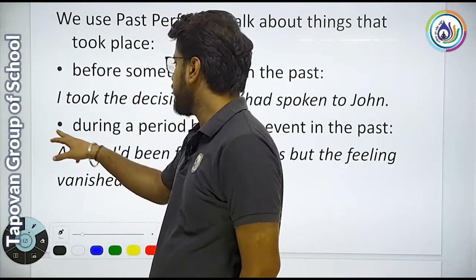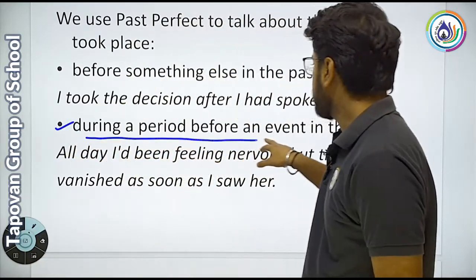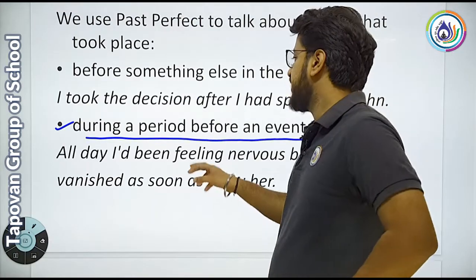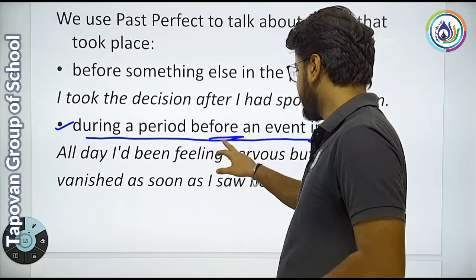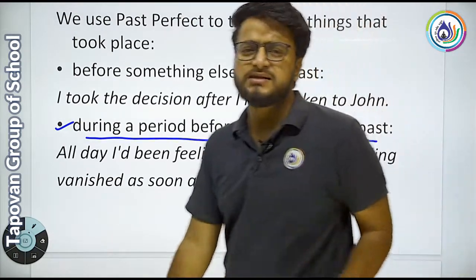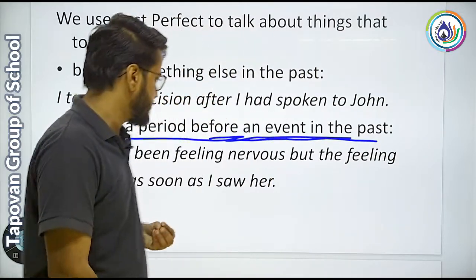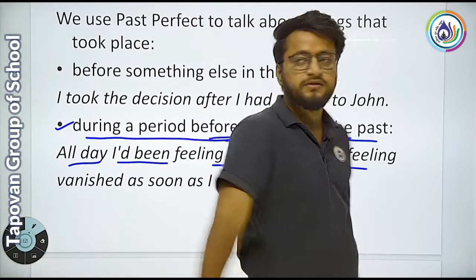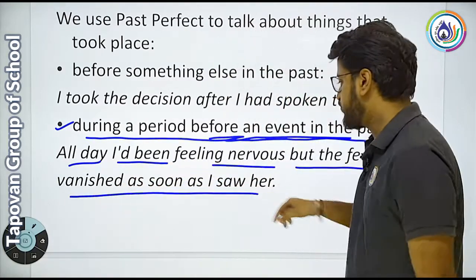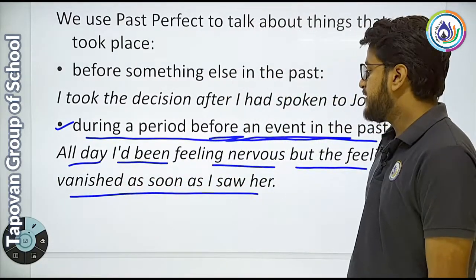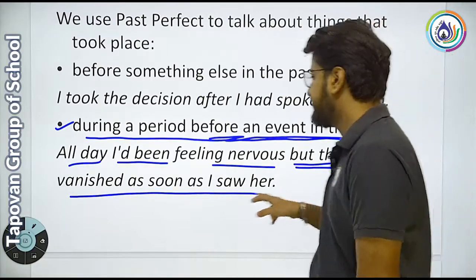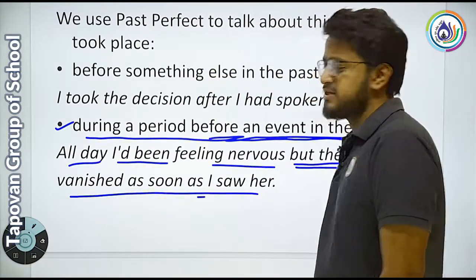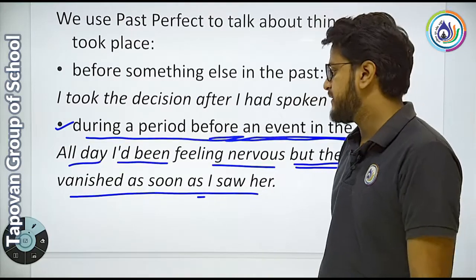Next point: during a period before an event in the past. एक ऐसे period को बताने के लिए, before an event in the past — किसी past के event के पहले. Example: All day I had been feeling nervous, but the feeling vanished as soon as I saw her. मैं पूरे दिन feeling nervous था, but the feeling vanished — लेकिन मैं बाद में खुश हो गया, as soon as I saw her.